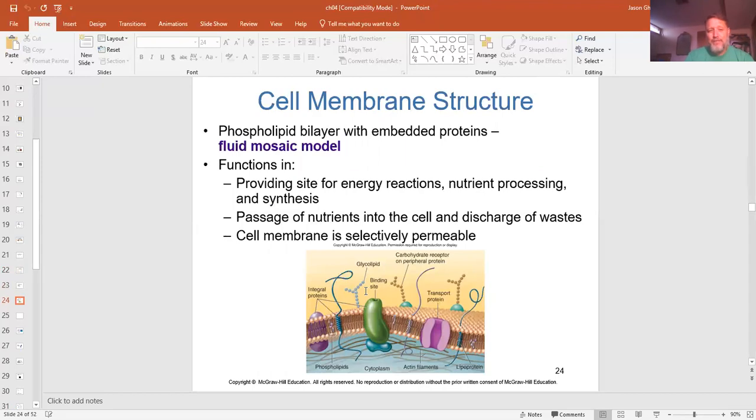The cell membrane itself, it's pretty much the same as it is on any other organism. It's the fluid mosaic. You've got the phospholipid bilayer. You have proteins through them. Their membranes are all sites of chemical reactions. Nutrients get processed through them. They absorb nutrients and discharge waste, just like any other plasma membrane on any other organism.